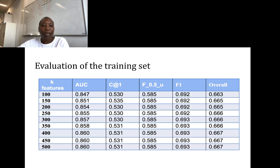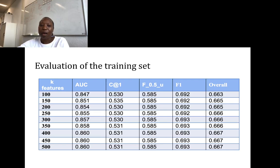By ranking the features according to their relative frequencies in the text, we vary the number of features used in computation of the writing styles. The similarity computed with 100 features gives an overall performance of 0.663. The values of k are increased at a step of 50 features, and at 400 features we reach a maximum overall performance of 0.667. No further increase in overall performance is observed with further increase in the values of k.